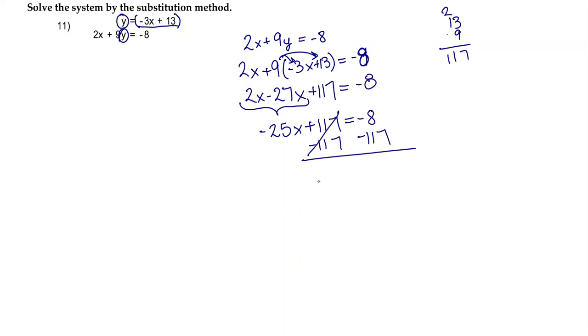So I'm left with negative 25x is equal to negative 125. And then since this x is being multiplied to the negative 25, and I want x by itself and positive, I'm going to divide by negative 25 on both sides.